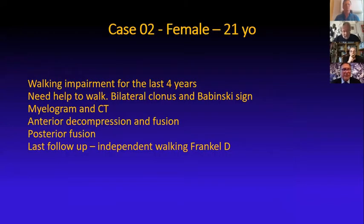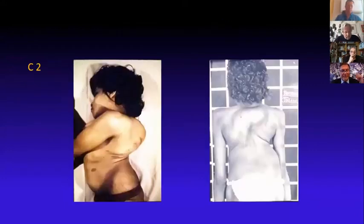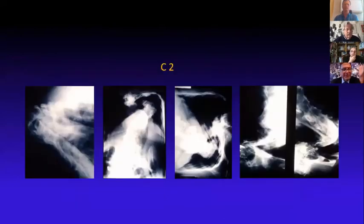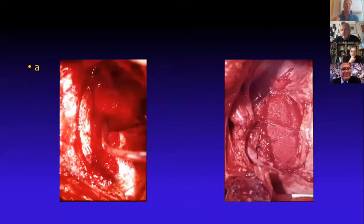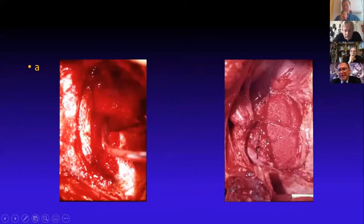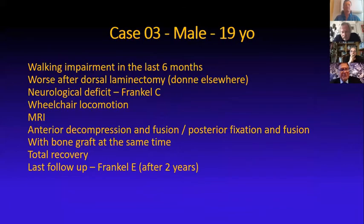Another female, 21 years old, with walking impairment in the last four years requiring help to walk. You can see it's a very severe kyphoscoliosis that scares everybody who looks at it. You can see by the exams that there is compression of the lungs. We did the anterior approach, decompressed the spinal cord, covered it in a hemostatic way, and then performed posterior stabilization.